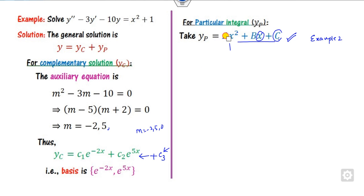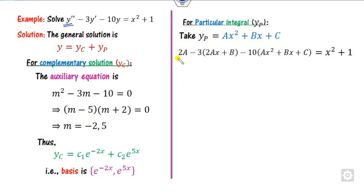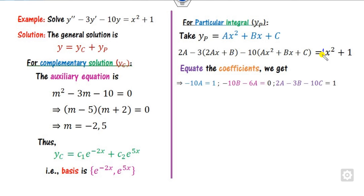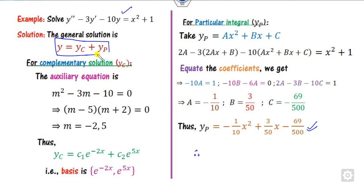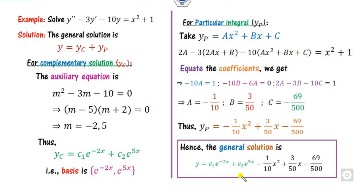Once yp is defined, substitute it into the given differential equation. For that you need y' and y''. Computing these and substituting: y'' = 2a, and equating coefficients on both sides — the coefficient of x² gives -10a = 1, so a = -1/10. Substituting a gives b, substituting a and b gives c. Once you have a, b, c, substitute to get yp, giving the general solution yc + yp.